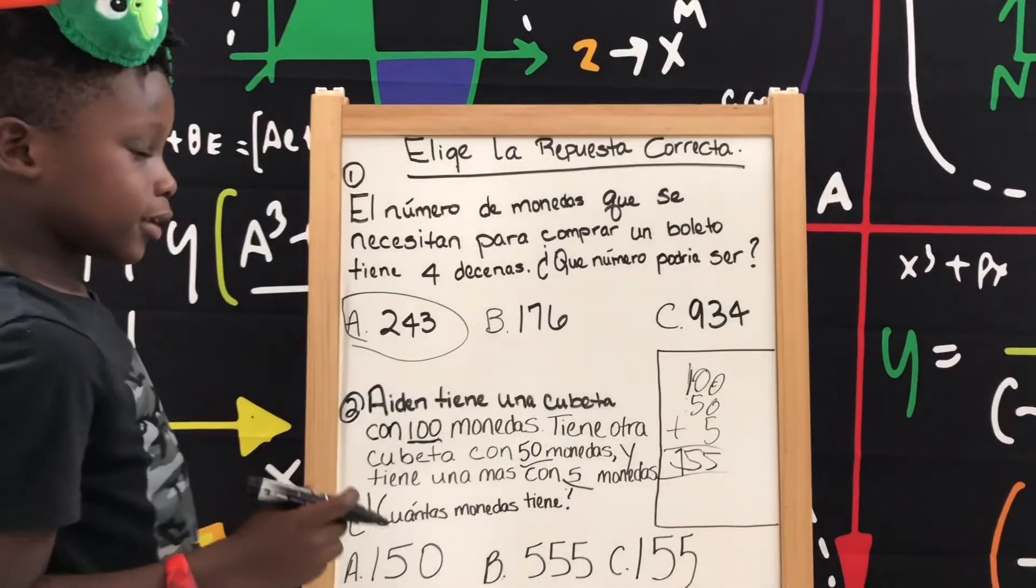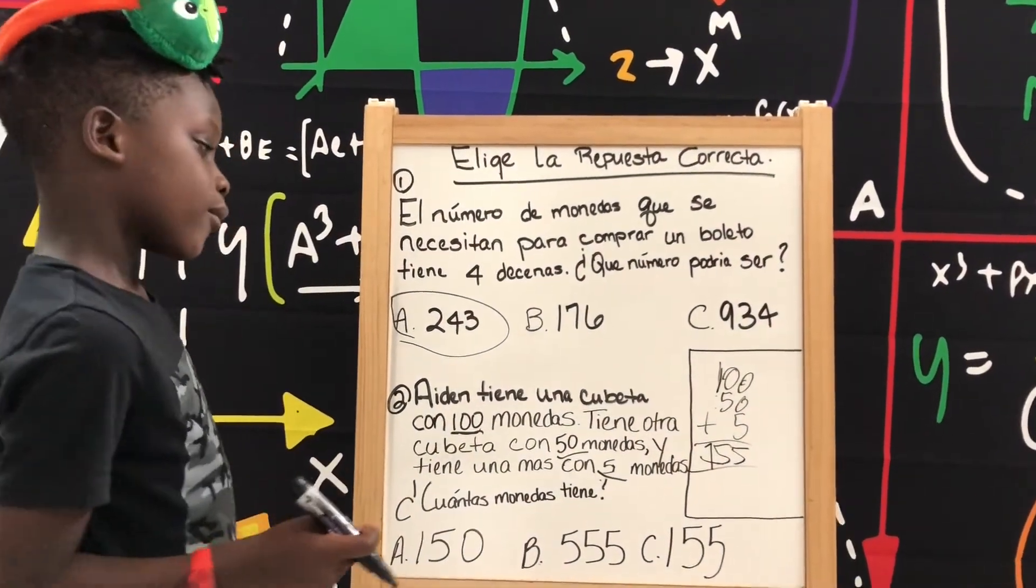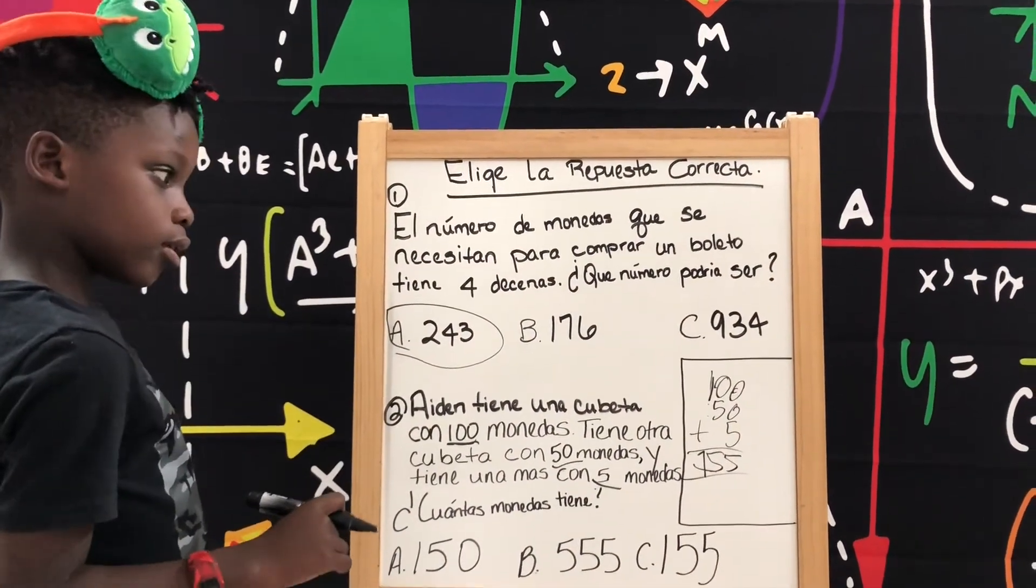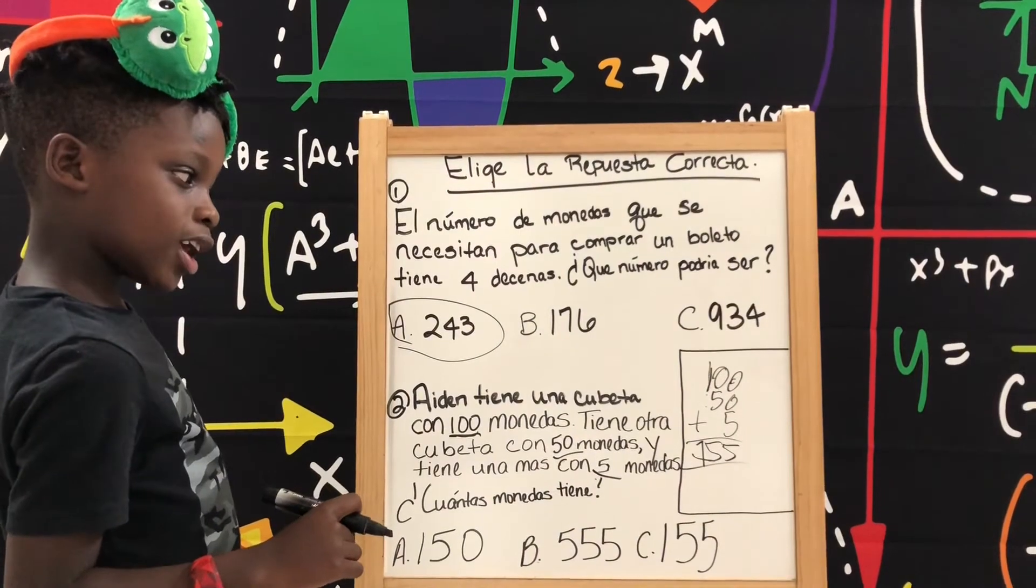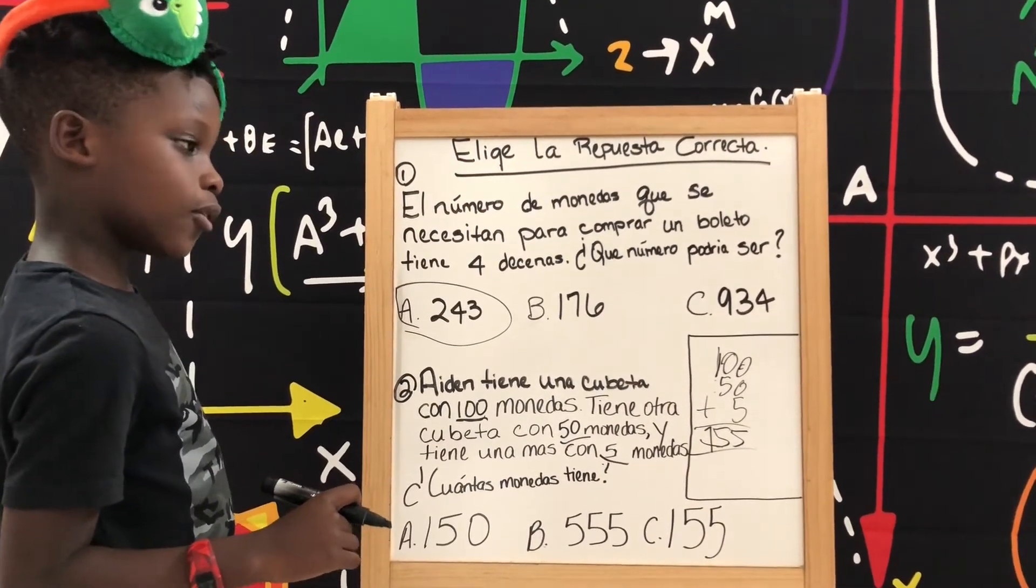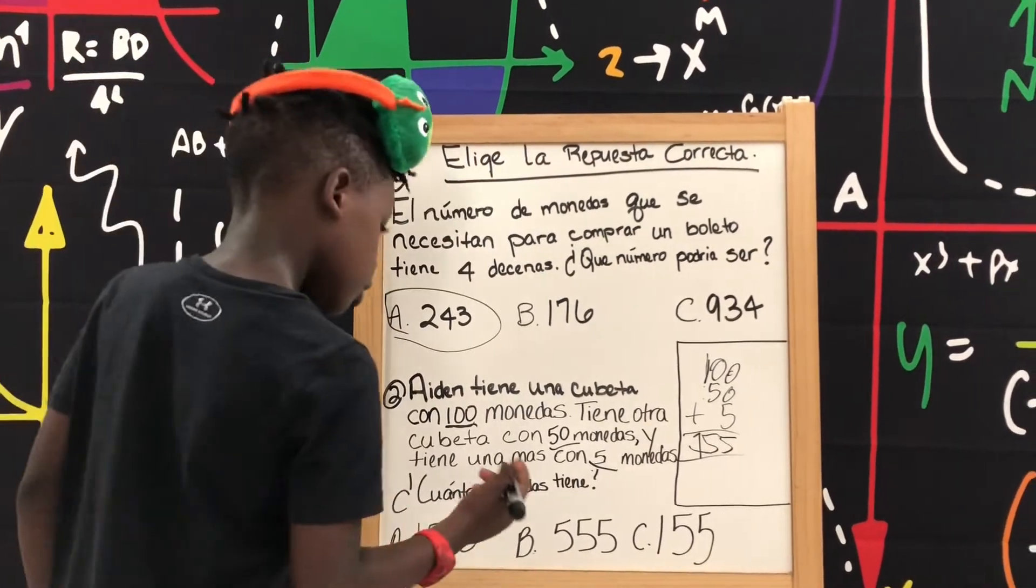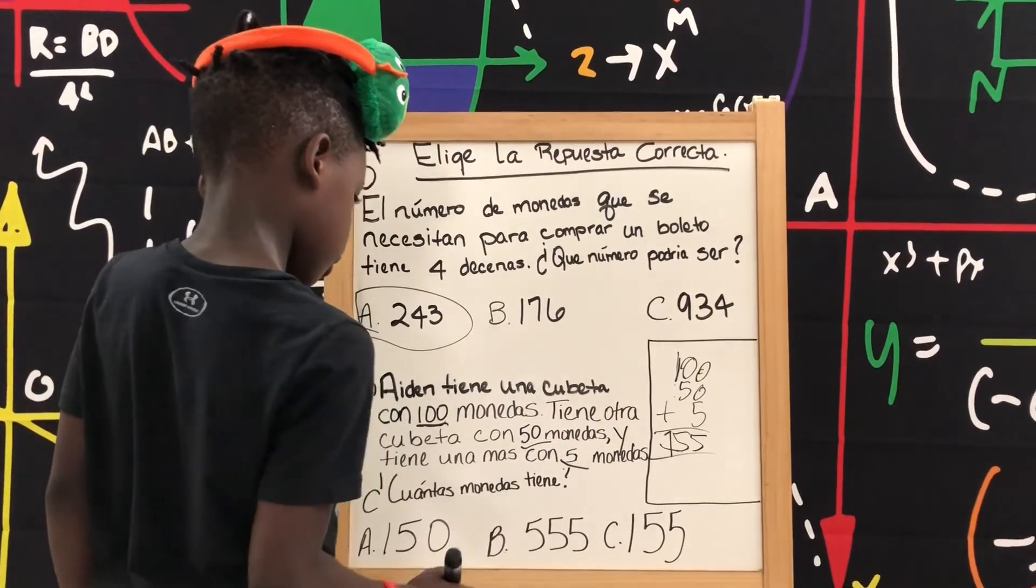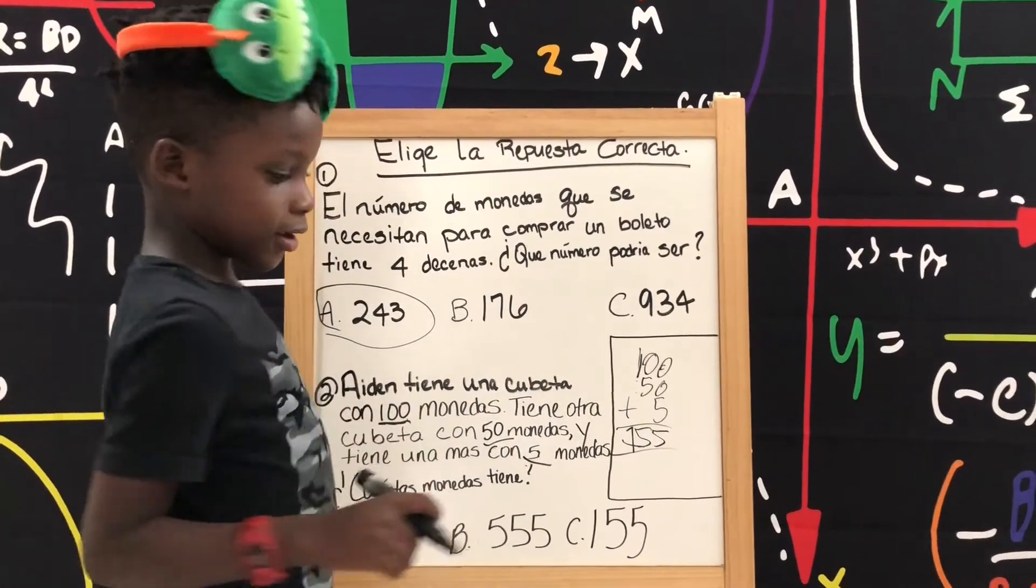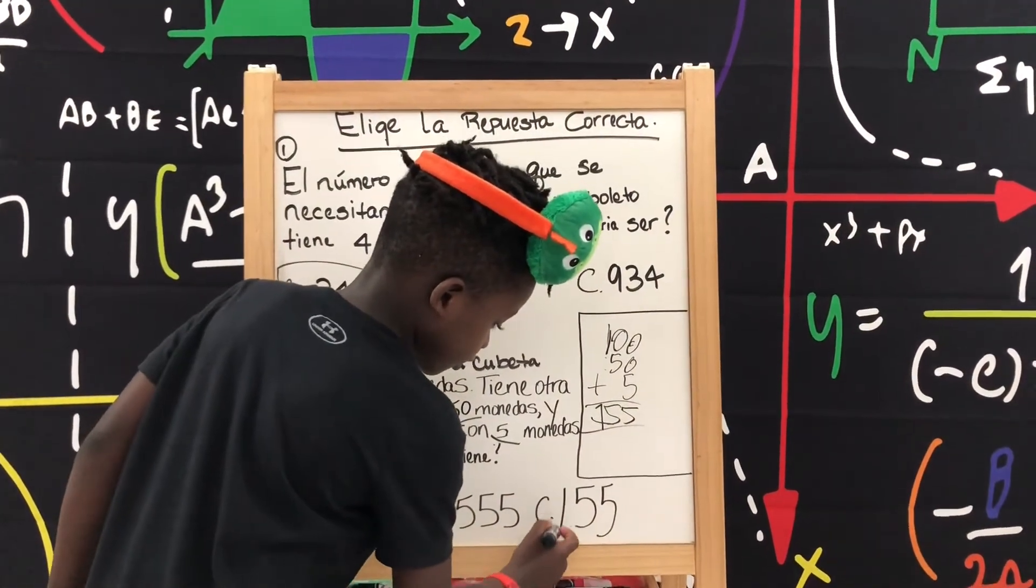Entonces, la correcta respuesta es ciento cincuenta y cinco. Ciento cincuenta y cinco. Entonces, la respuesta correcta es esto.